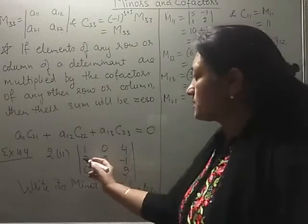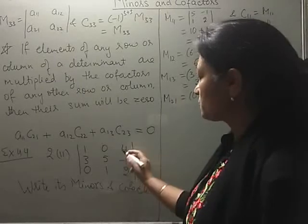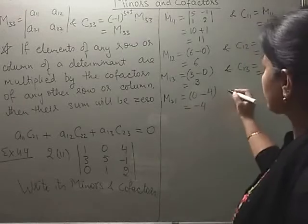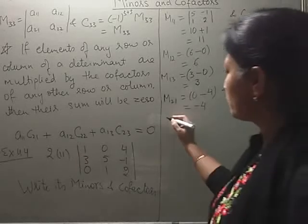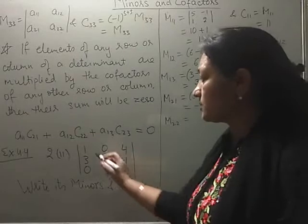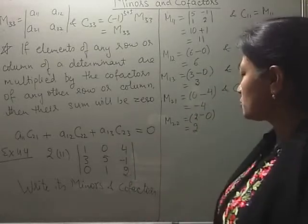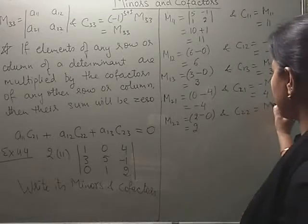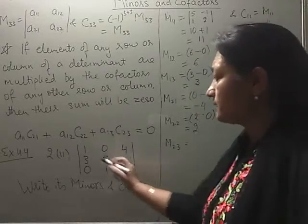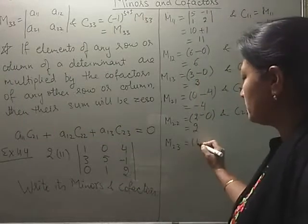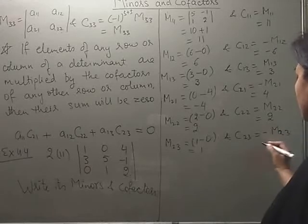For M21, delete second row and first column: 0 times 2 minus minus 1 times 4 equals minus 4, so M21 equals minus 4 and C21 equals 4. For M22, delete second row and second column: 1 times 2 minus 0 times 4 equals 2, so M22 equals 2 and C22 equals 2. For M23, delete second row and third column: 1 times 1 minus 0 times 0 equals 1, so M23 equals 1 and C23 equals minus 1.